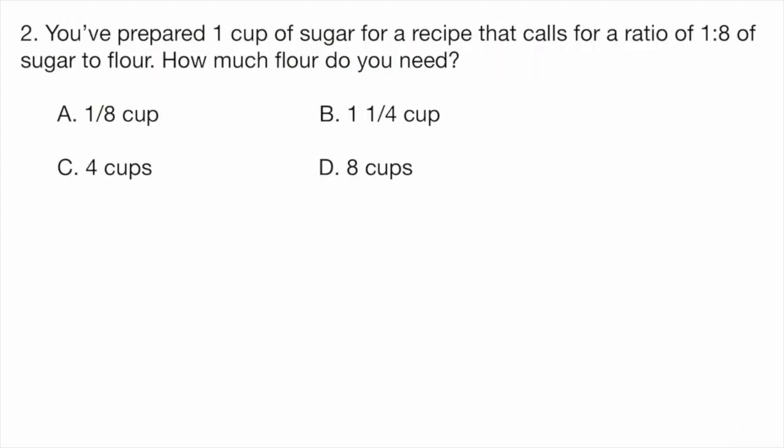Question two, you've prepared one cup of sugar for a recipe that calls for a ratio of one to eight of sugar to flour. How much flour do you need? A, one-eighth cup. B, one and one-fourth cup. C, four cups. Or D, eight cups.